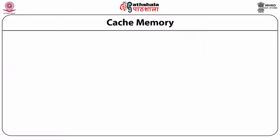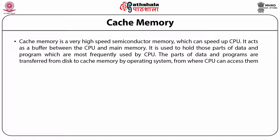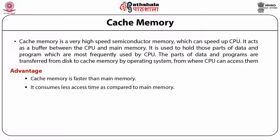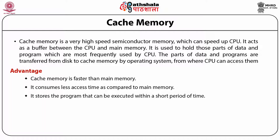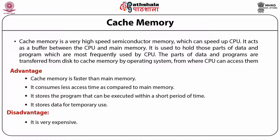Cache memory is a high speed semiconductor memory which can speed up the CPU. It acts as a buffer between CPU and main memory. It is used to hold those parts of data and the program which are most frequently used by the CPU. The parts of data and programs are transferred from disk to cache memory by the operating system, from where CPU can access them. The advantage of cache memory is that it is faster than main memory and consumes less access time. It stores a program that can be executed within a short period of time and for temporary use. The disadvantage is it is very expensive and the capacity is limited.